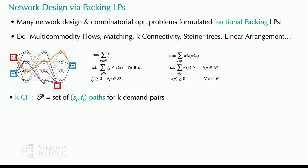The running example for the talk will be the K-commodity flow problem. We get a directed, capacitated graph and a set of K demand pairs — the blue pairs, red pairs, green pairs, yellow pairs. Think of K as huge — it's potentially N-squared kinds of paths. Our goal is to route the maximum amount of flow between all the legal demand pairs while respecting the edge capacities.